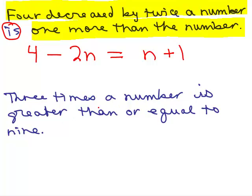And let's see this last one. Three times a number is greater than or equal to nine. Tricky. So I've got this whole part is greater than or equal to. That's this symbol. Greater than or equal to.